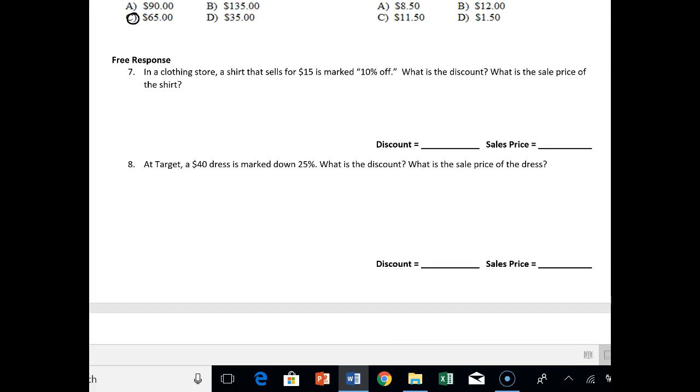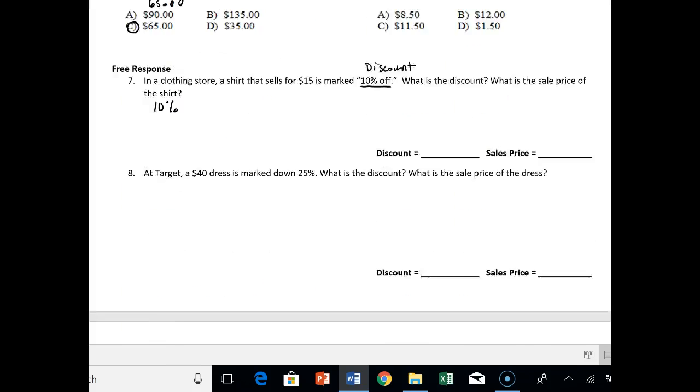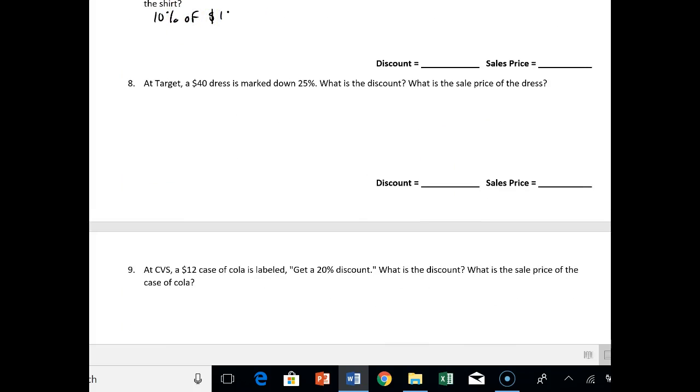And then watch for the big-time difference in these following problems. So it says, in a clothing store, a shirt that sells for $15 is marked 10% off. So here's your discount right here. What is the discount? What is the sale price of the shirt? So you have two answers here. First, you want to figure out what's 10% of $15. And then you want to find what the sale price is. So taking that discount and subtracting it from the original price. For 10% of $15, you're just going to do 15 times 0.10. That's 1.5. So we know that as $1.50.